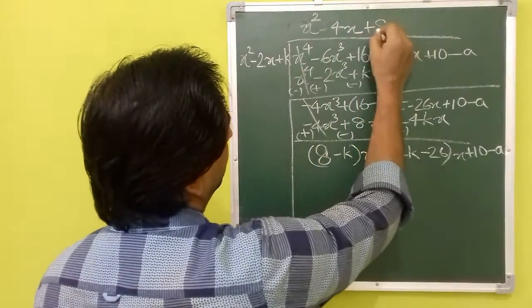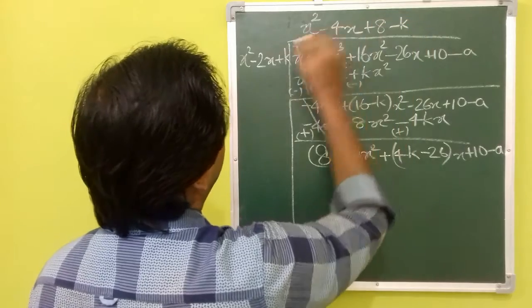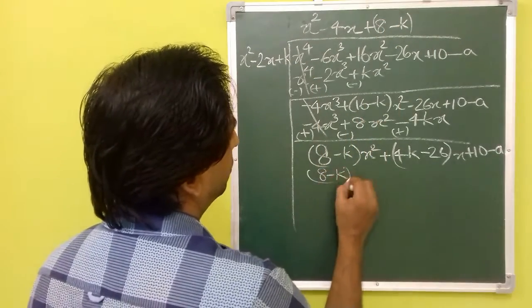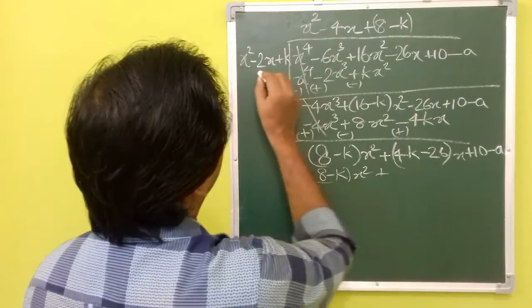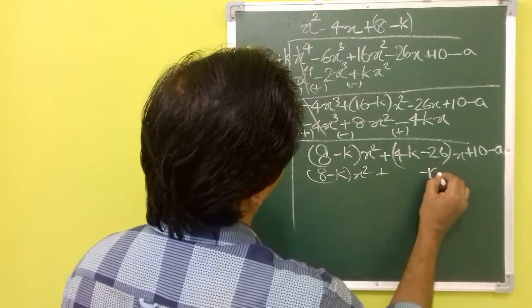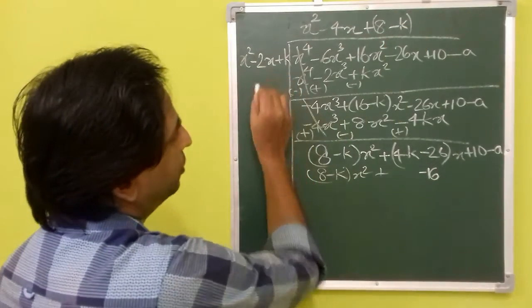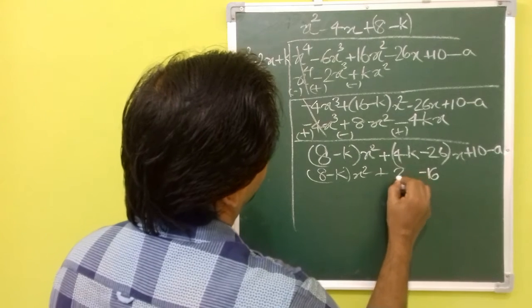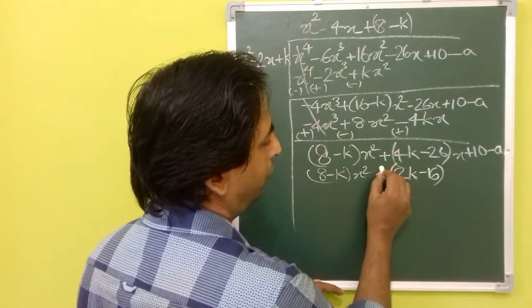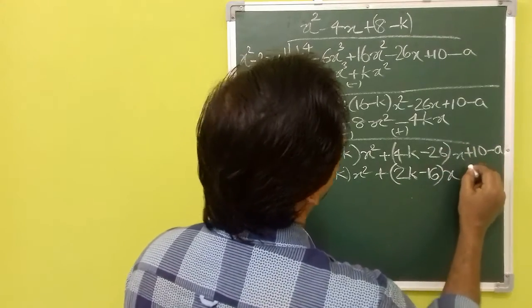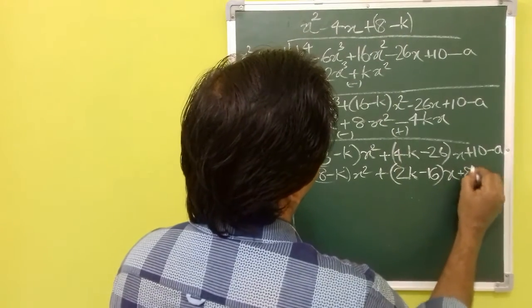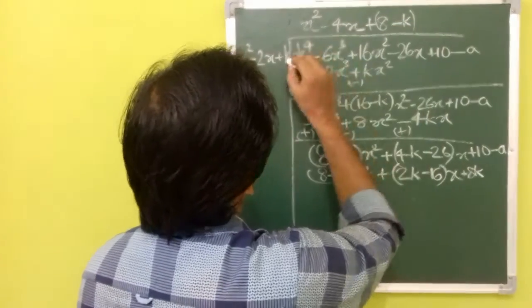The x squared coefficient is 8 minus k. So, you can put it here. Now, you multiply each term in the divisor with 8 minus k. So, you get 8 minus k into x squared. Plus 8 into minus 2 is minus 16. And minus k into minus 2x will be plus 2kx. We have put the positive term in front for convenience. Then, 8 minus k into k is 8k minus k squared.